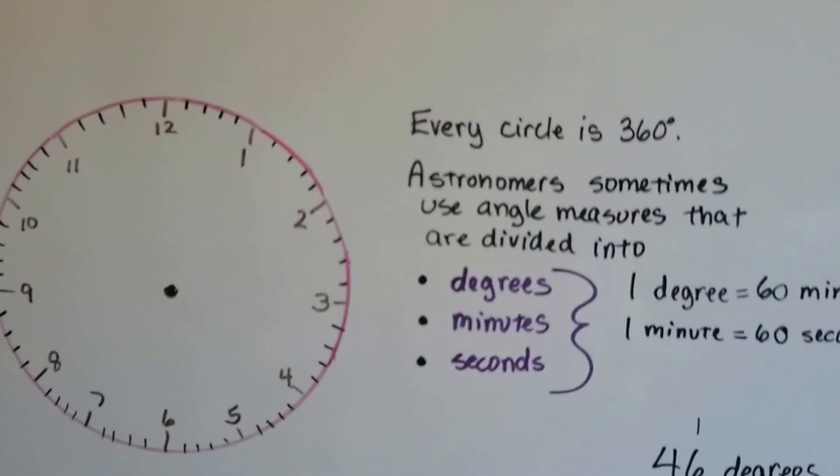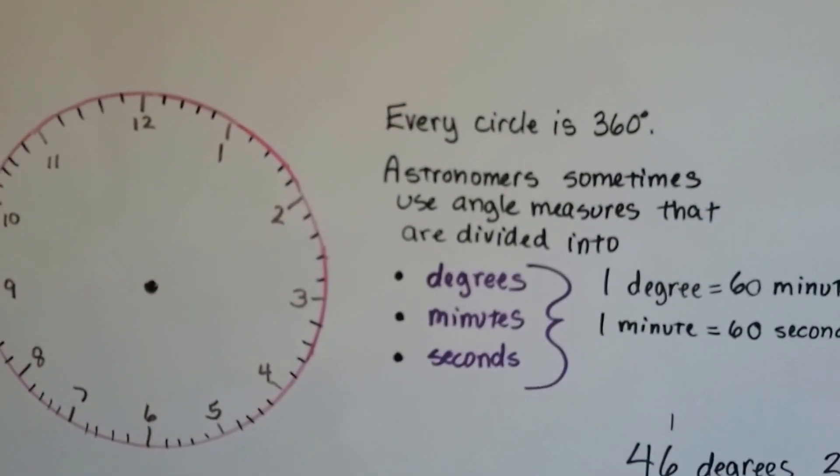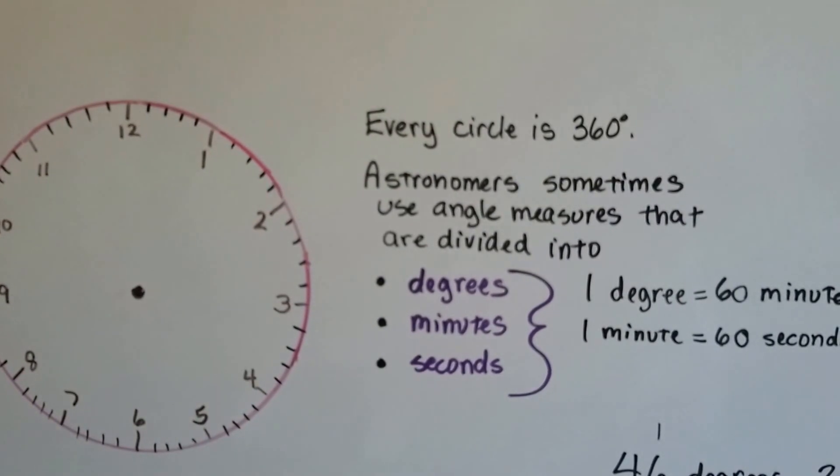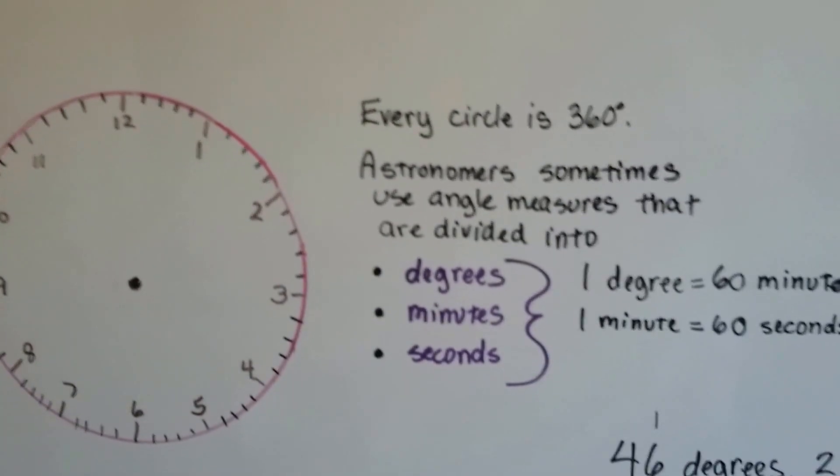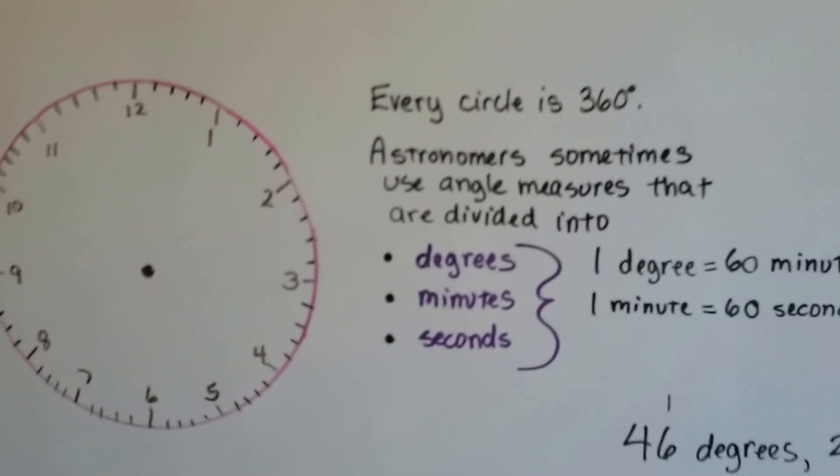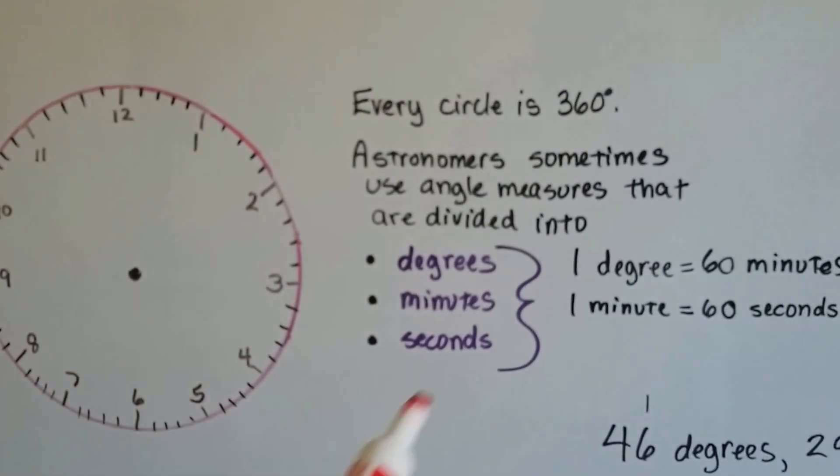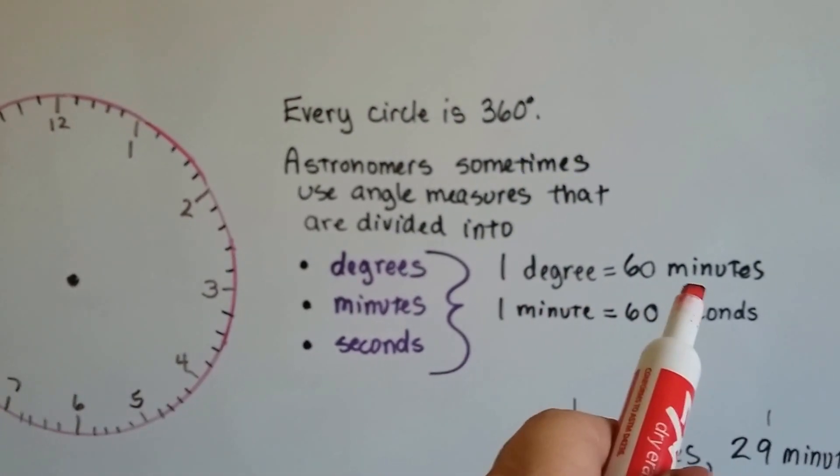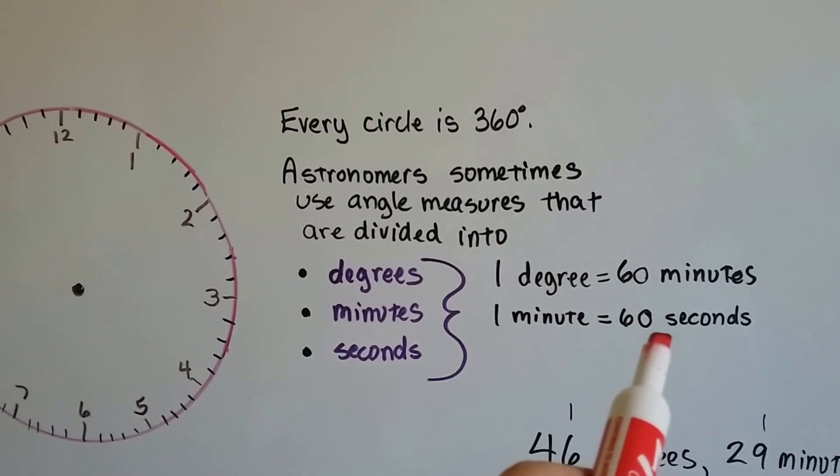Well, every circle is 360 degrees. Astronomers sometimes use angle measures that are divided into degrees, minutes, and seconds. One degree is equal to 60 minutes, and one minute is equal to 60 seconds.